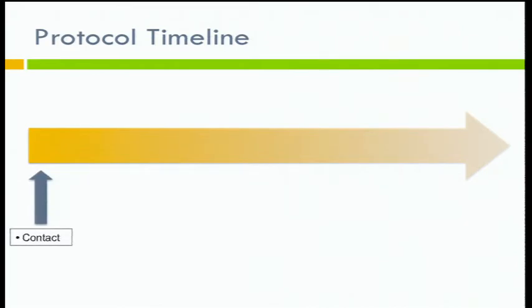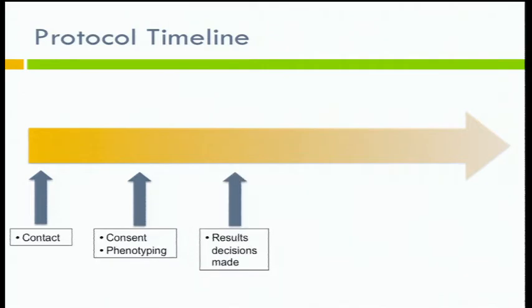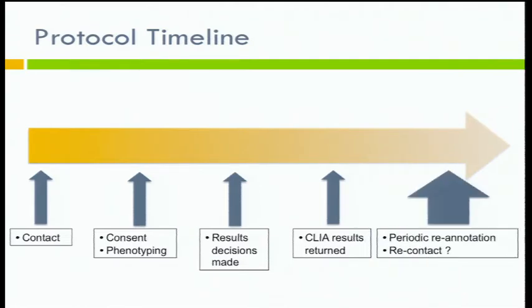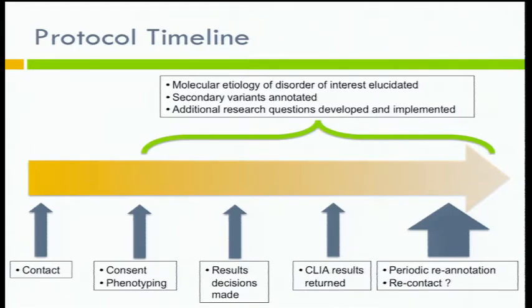Thinking about the timeline: participants come to NIH, sign our consent form, talk with us, and we do some additional phenotyping. Importantly, that is not concurrent with their decision about what kinds of results they'd like to receive. At some point they make a decision about what results they'd like to receive. We CLIA-validate those results and return them at another NIH visit in person. We leave the door open for ongoing periodic re-annotation of their exome sequence, which may include possible future re-contact, while we work toward uncovering the cause of the disorder of interest and annotating secondary variants.